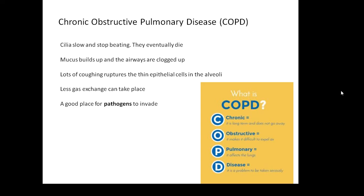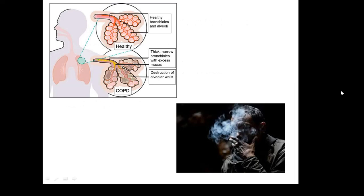COPD — an awful lot of people suffer from this. What's the big nasty cause of COPD? Well, one of them — you've probably guessed — is smoking. Heavy smokers, people who've smoked for many years, very often end up suffering from COPD. If you look at the healthy bronchioles and alveoli, and then somebody with COPD, the bronchioles are much more narrow and they're blocked up with mucus, and the alveolar walls are damaged — and this is COPD.